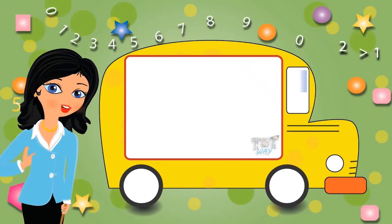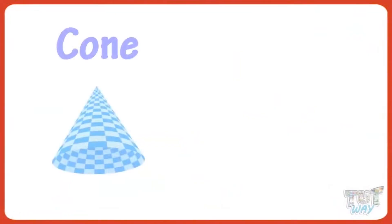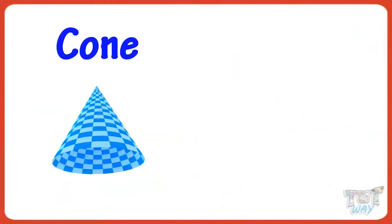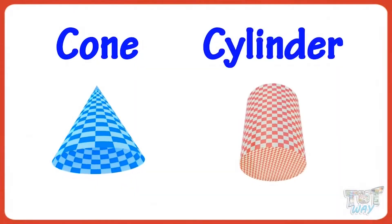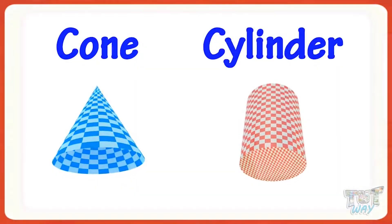Hi kids! Today we will learn about two shapes: cone and cylinder. Let's first start with a cone.